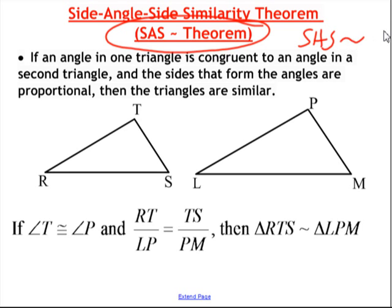And this basically says that if you have two sides and the angle between them, if the two sides are proportional, the sides that form the angles are proportional, then the triangles are similar. So not that they're congruent, but that they're proportional. So you see here,